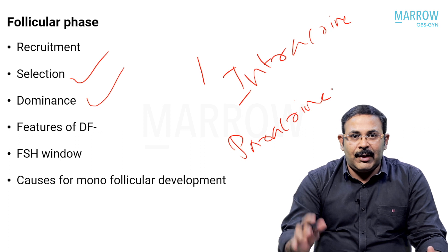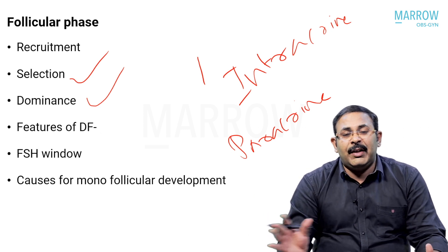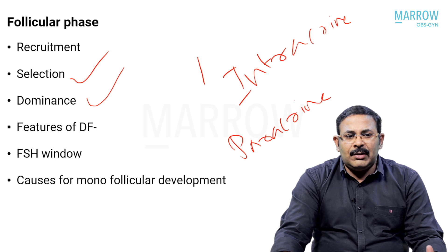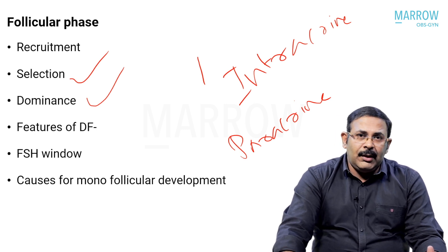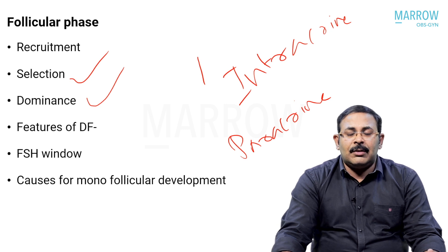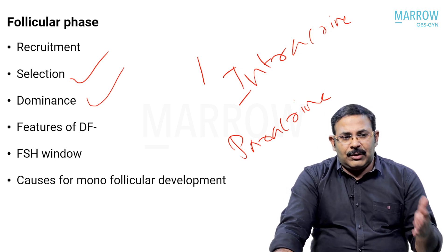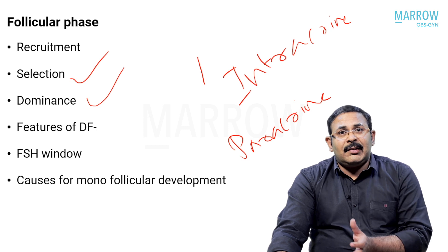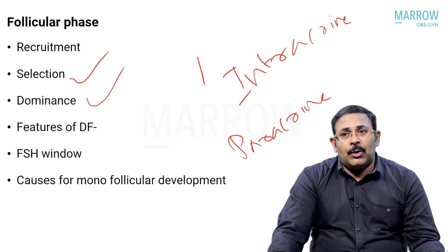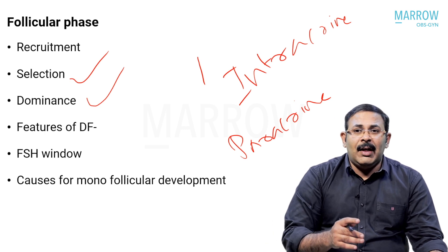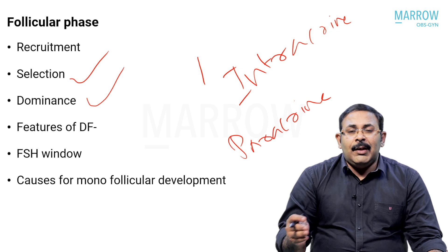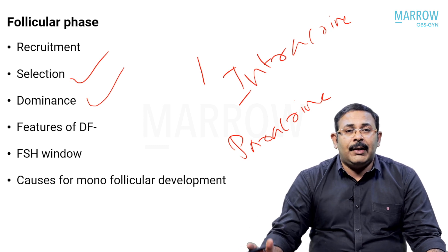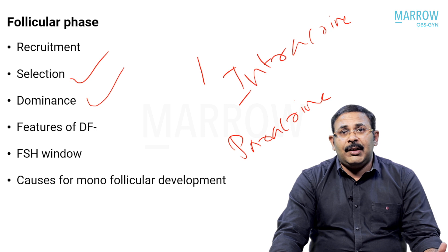Recruitment is a process happening by the influence of intracrine and paracrine factors. Intracrine means inside the ovary; paracrine means from adjacent areas. It is not very clear - there are so many things supposed to be influencing recruitment, but these are not very well supported. Possibly growth hormone and androgens might improve recruitment. This theory has been put forward because growth hormone administration has been used clinically in patients developing fewer follicles or with diminished ovarian reserve, stimulating better IVF response.